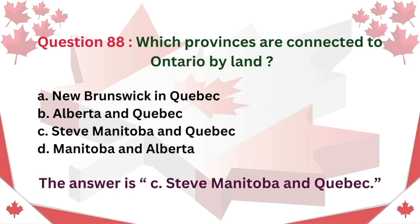Question 88: Which provinces are connected to Ontario by land? A. New Brunswick and Quebec. B. Alberta and Quebec. C. Manitoba and Quebec. D. Manitoba and Alberta. The answer is C: Manitoba and Quebec.